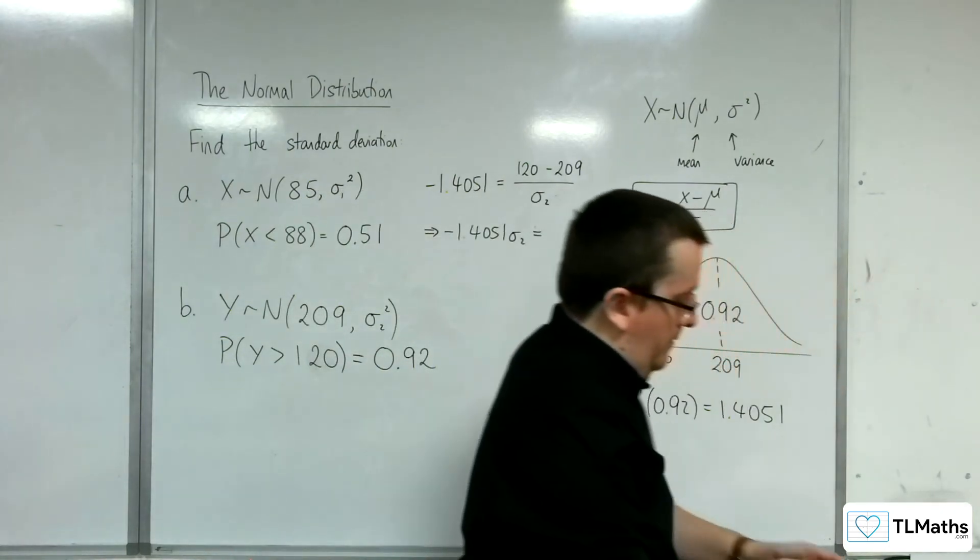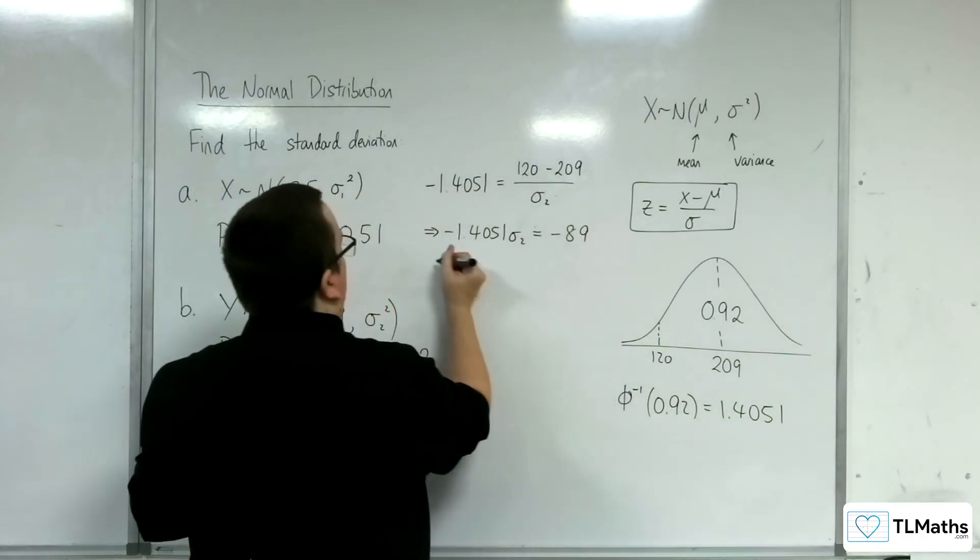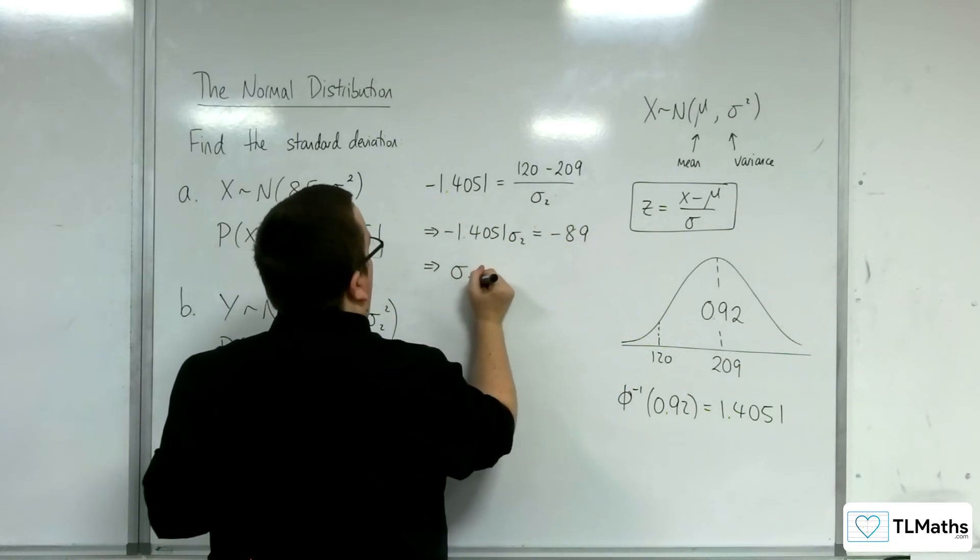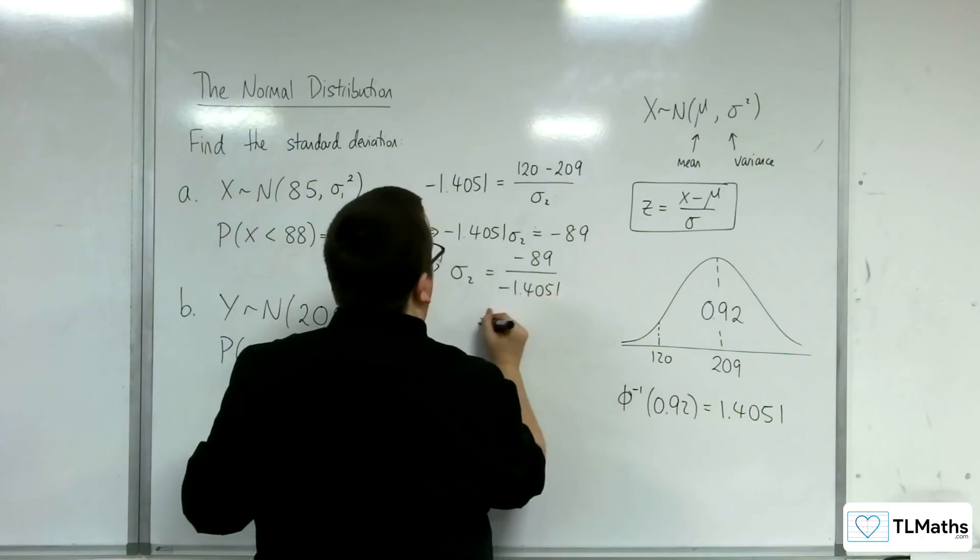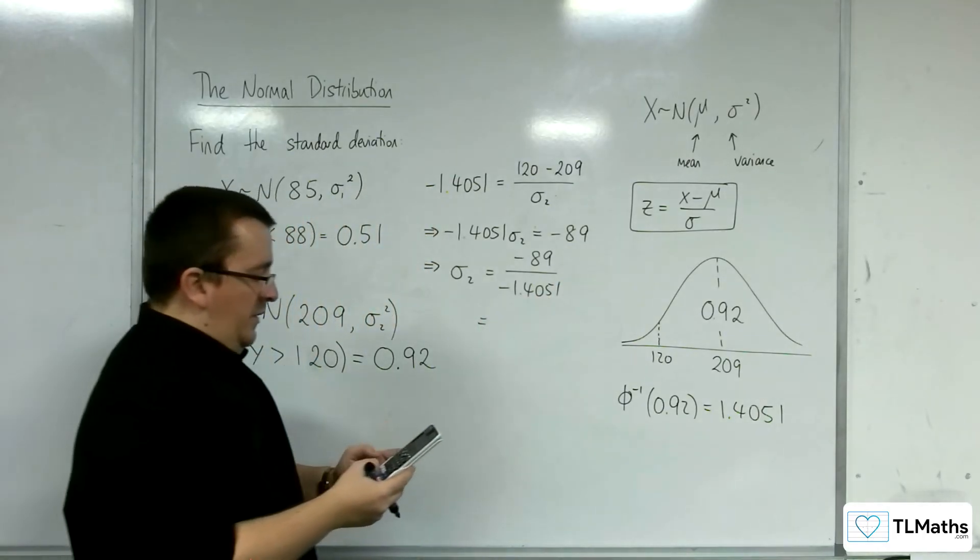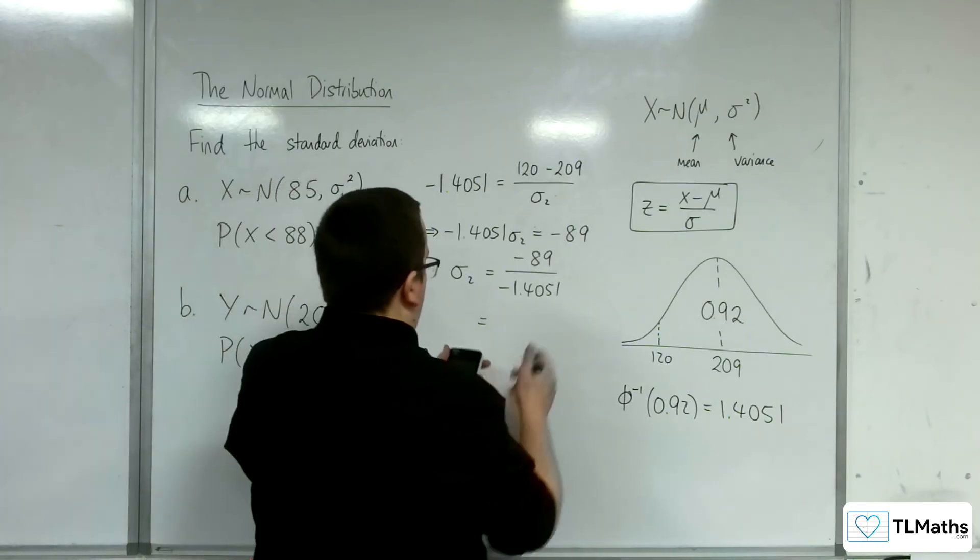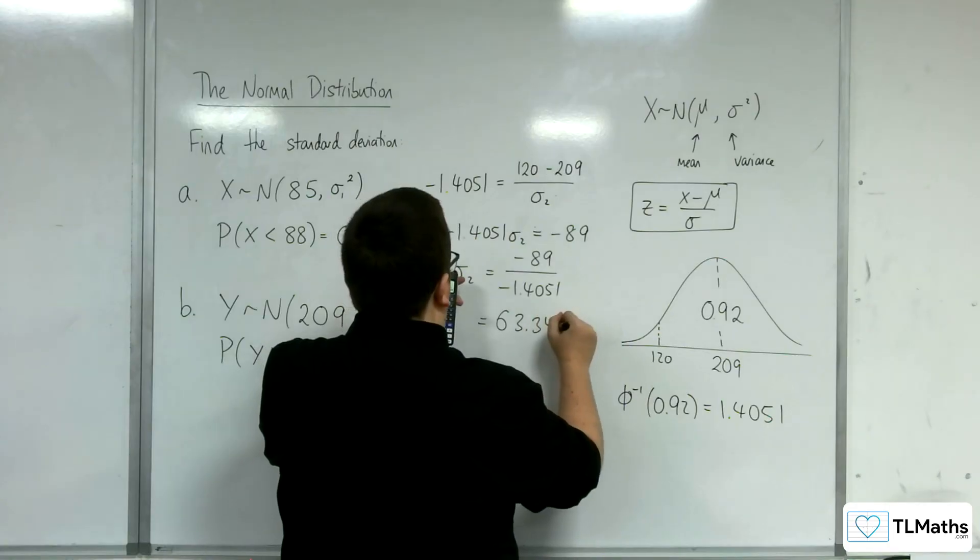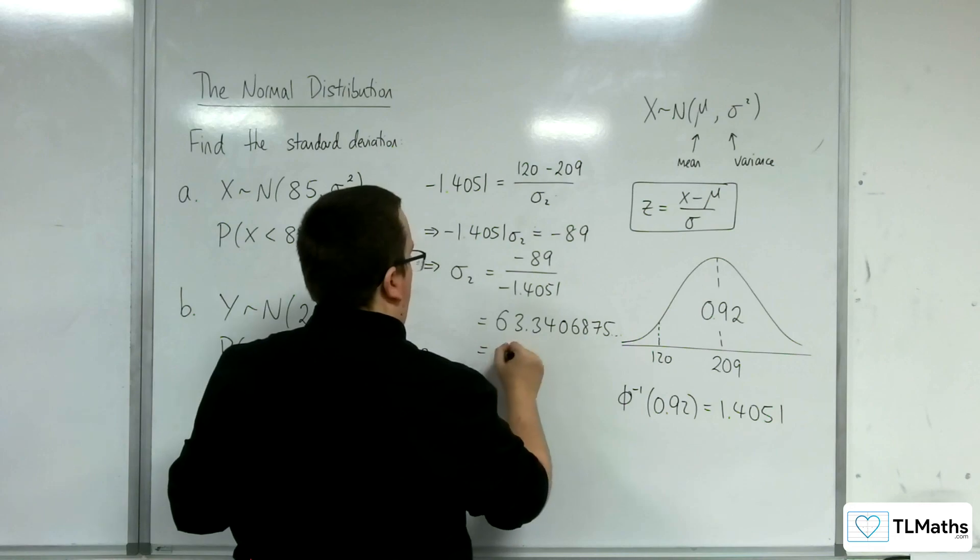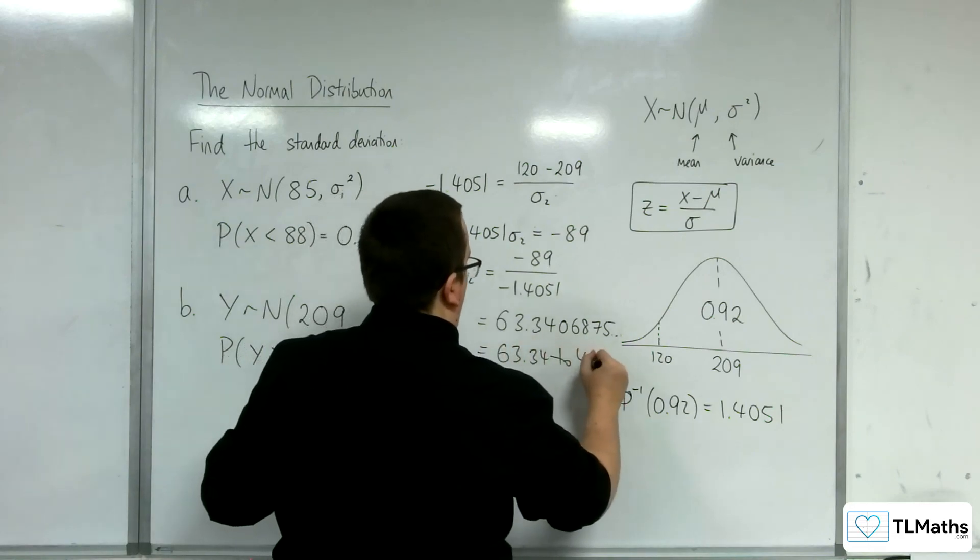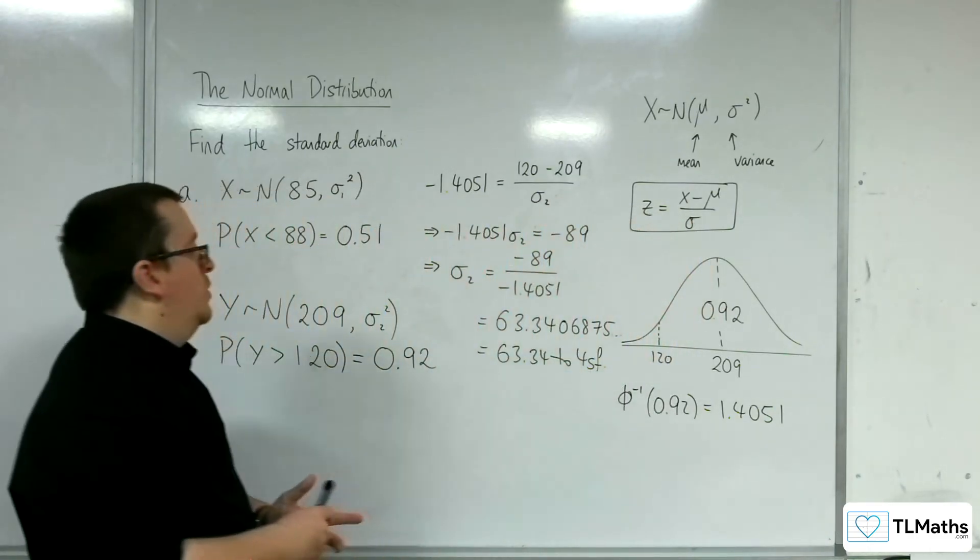Then we're going to do 120 take away 209, so minus 89. Sigma 2 is minus 89 divided by minus 1.4051. Careful with the negatives, they're going to cancel one another out. So we've got 89 divided by 1.4051, which is 63.3406875. So 63.34 to 4 significant figures. That will be the required standard deviation.